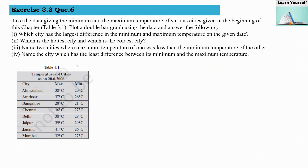Take the data giving the minimum and maximum temperature of various cities given in the beginning of the chapter — that is, we have to take table 3.1. Plot a double bar graph using this data and answer the following questions based on the bar graph.